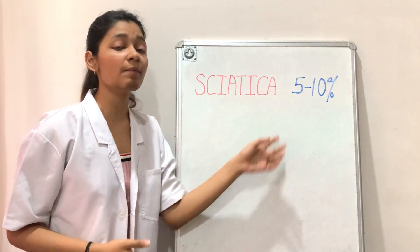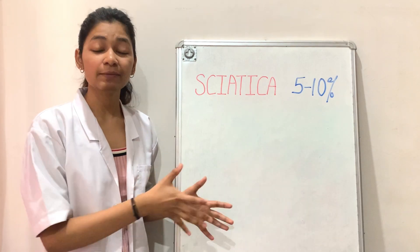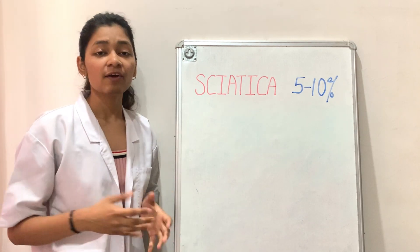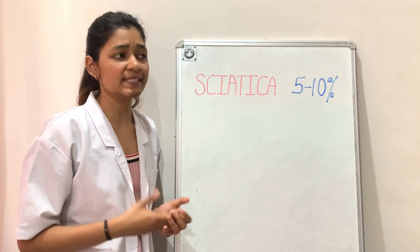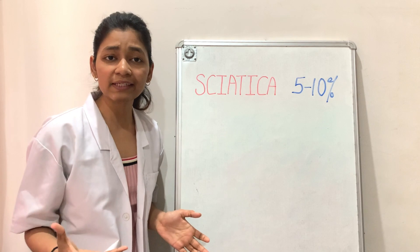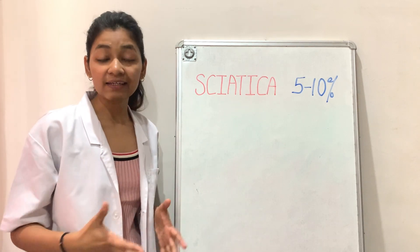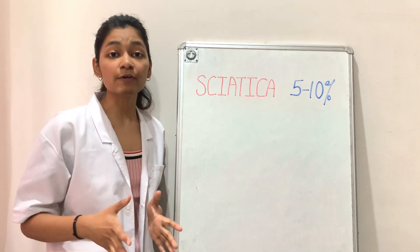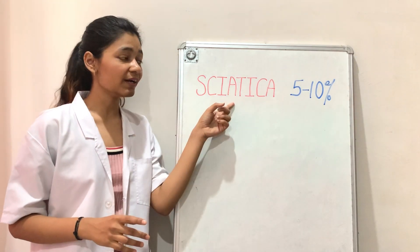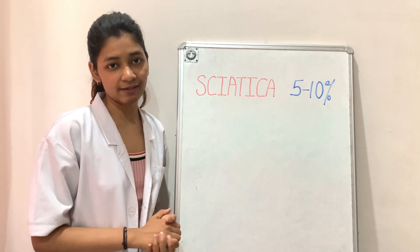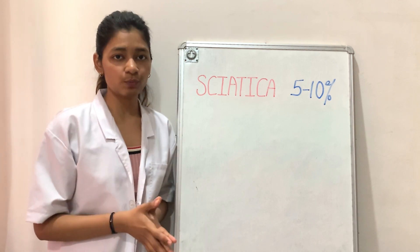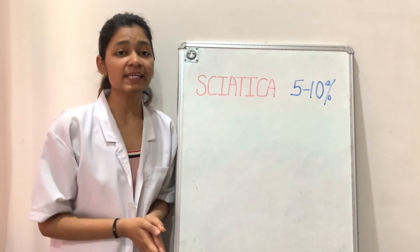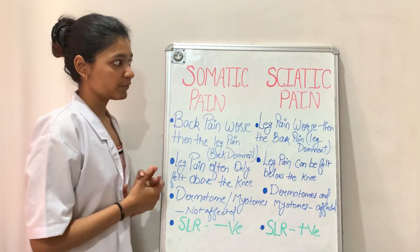Sciatica is quite rare and contributes to about five to ten percent of all leg pains. The majority of leg pains are due to somatic pain or referred pain. Referred pain basically means when there is any injury to a joint such as the facet joint or sacroiliac joint, or any ligament or muscle injury around the low back area, that leads to referral of those symptoms into the leg — but there is no compression of any nerve, unlike in sciatica where the sciatic nerve gets compressed due to a herniated disc. It is very important to differentiate between referred pain, which is very common, and sciatic pain, which is quite rare.